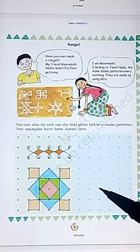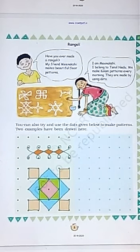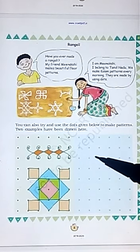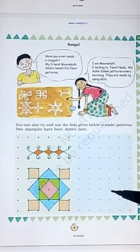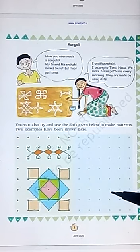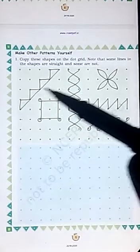In this one, you have to draw some squares by changing angles. You have to draw the same Rangoli here by joining dots. In page number four, you have to follow these patterns and you have to copy all these shapes here.